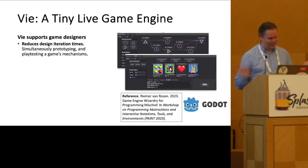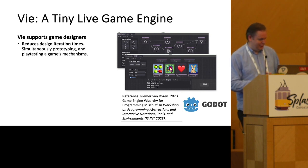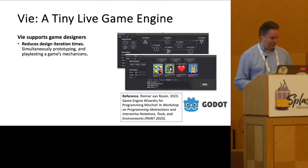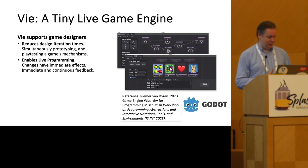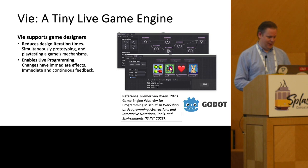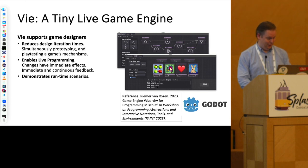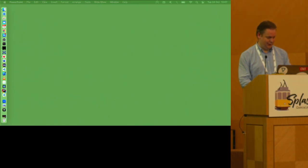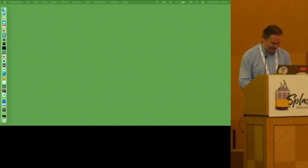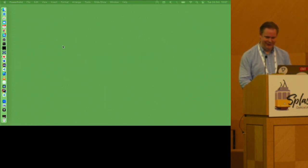Let's go to the engine itself. It's called V. It reduces design iteration times and allows designers to simultaneously prototype and playtest the game's mechanisms. It enables live programming — changes have immediate effects with immediate and continuous feedback. It demonstrates runtime state scenarios. Now I will do something dangerous, which is to actually perform live programming live in my presentation.